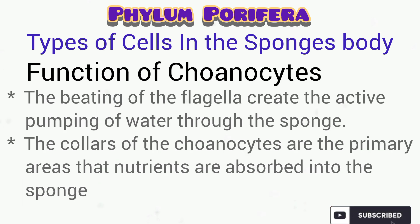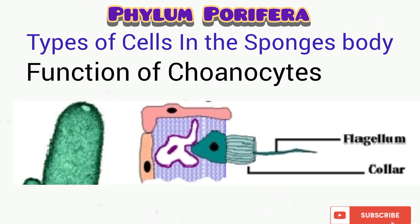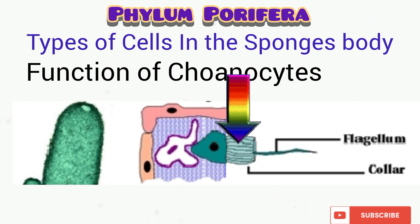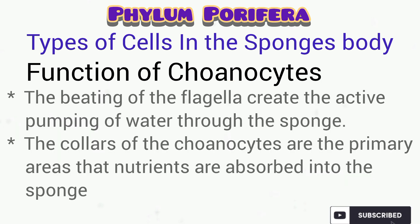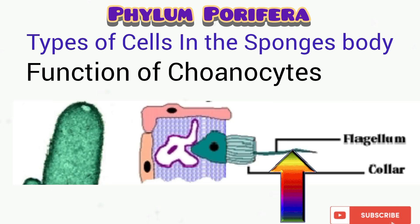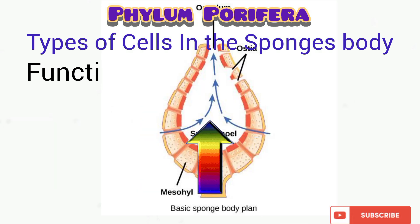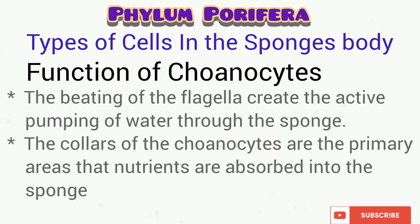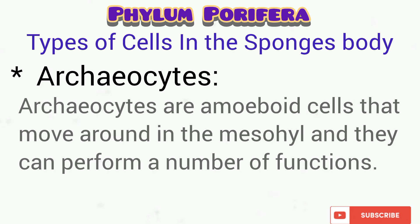What are the functions of the choanocyte? As you can see from the diagram, the collar of the choanocyte is the primary area where nutrients are actually absorbed into the body of the sponges, and the beating of the flagella of the choanocyte creates the water currents that eventually flow through the body of the sponge, where gaseous exchange and discharge of waste actually take place.